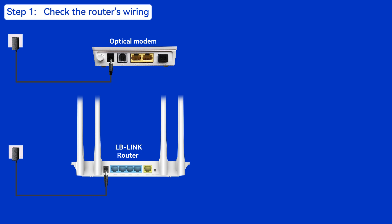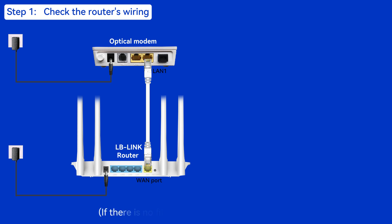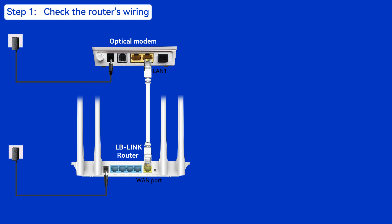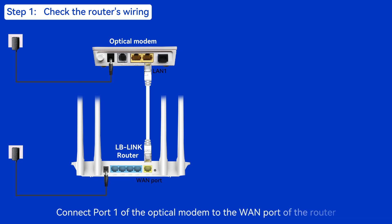Step 1: Check the router's wiring. Ensure that one fiber optic modem can only be connected to one router. If there is no fiber optic modem, just ignore it. Then make sure that the network cable is connected to the WAN port of the router. Connect port one of the optical modem to the WAN port of the router.